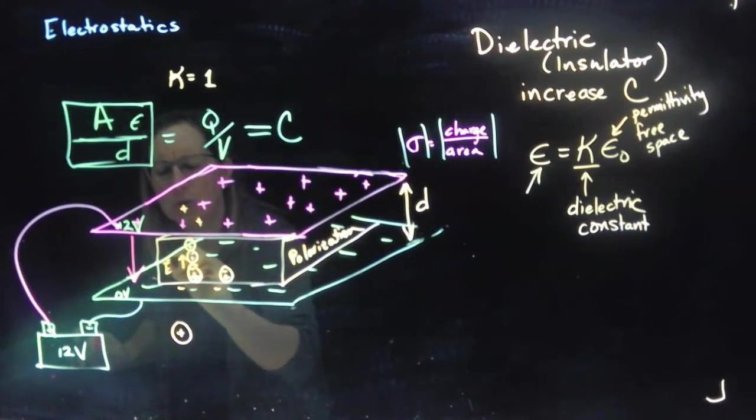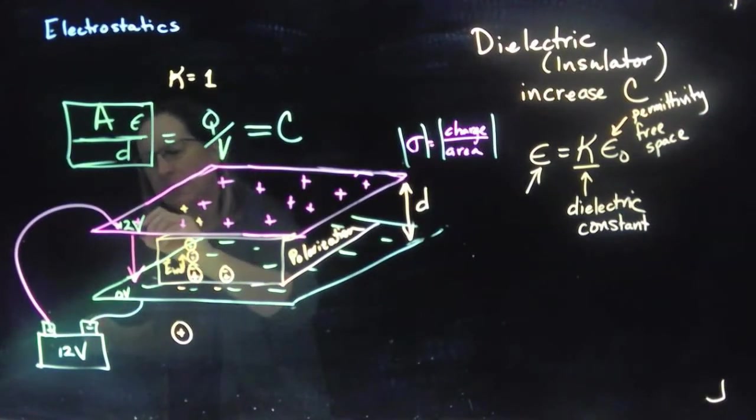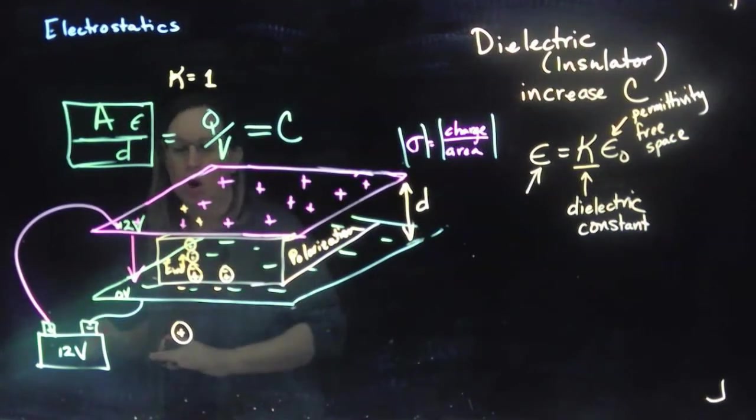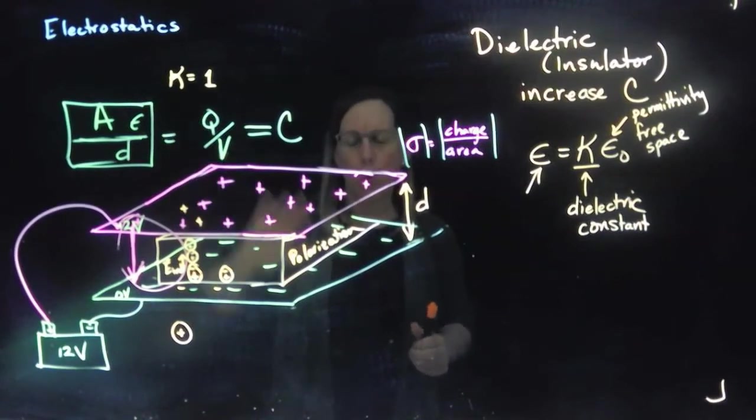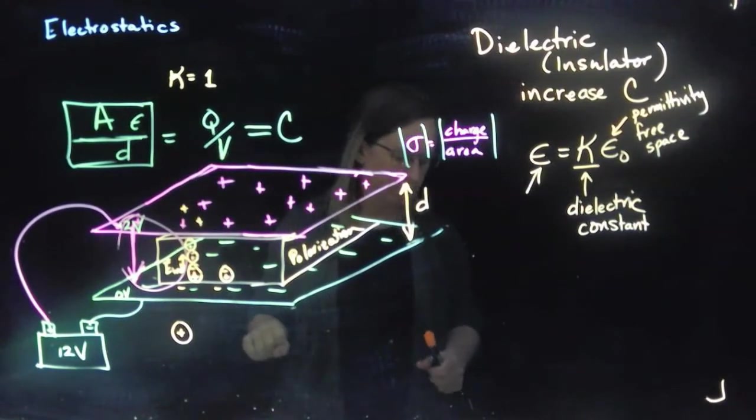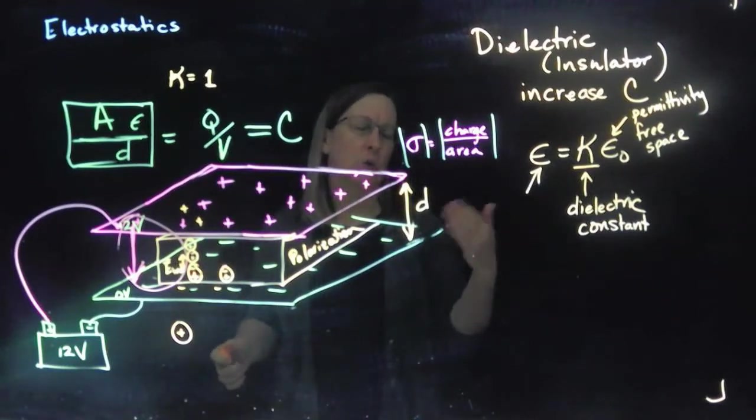This is called our induced electric field. And so then this electric field can sort of increase so that this plus this get us our original electric field back. At the same voltage, we can hold on to more charges. And so this is a way we really increase our capacitance.